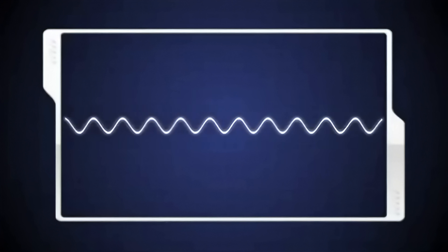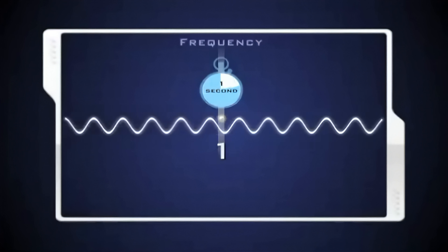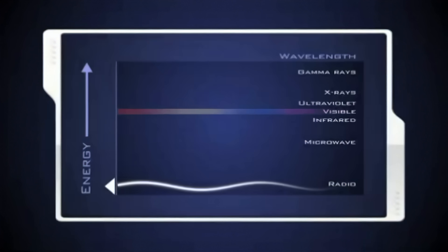The number of these crests that pass a given point within one second is described as the frequency of the wave. One wave or cycle per second is called a Hertz. Long EM waves such as radio waves have the lowest frequency and carry less energy. Adding energy increases the frequency of the wave and makes the wavelength shorter. Gamma rays are the shortest, highest energy waves in the spectrum.